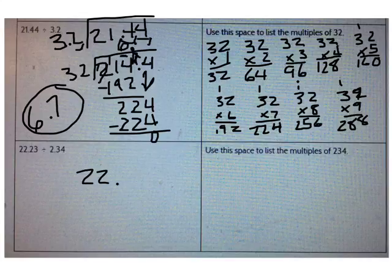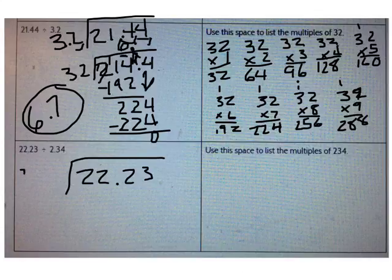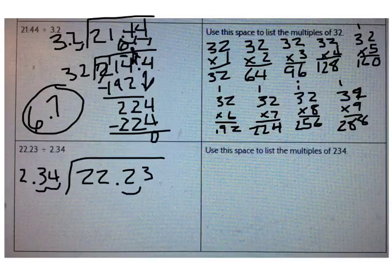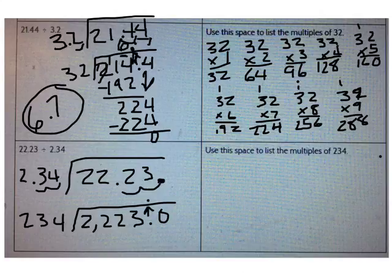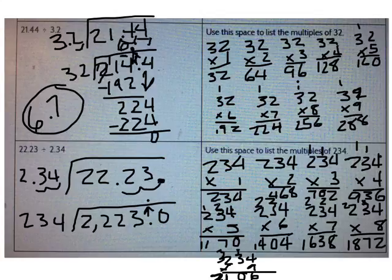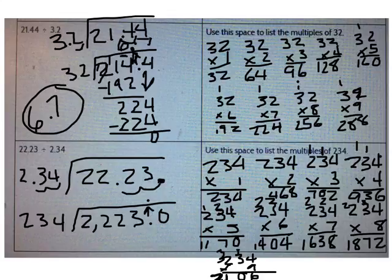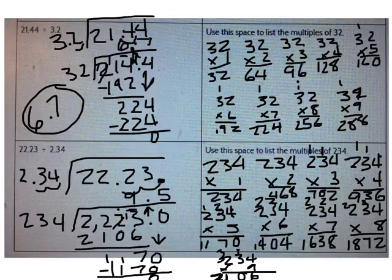Let's do one last problem: 22 and 23 hundredths divided by 2 and 34 hundredths. How many times do I need to move the decimal? I need to move the decimal twice. I'm going to create a new problem: 2,223 and 0 tenths divided by 234. Now list the multiples of 234. Check your work with mine. Now go ahead and solve this division problem. When you're finished, check your work with mine. The correct answer is 9 and 5 tenths.